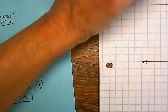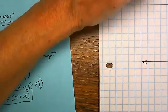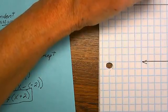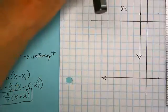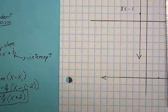Doesn't matter what y is. x is always negative 1. So the equation of this line is x equals negative 1.